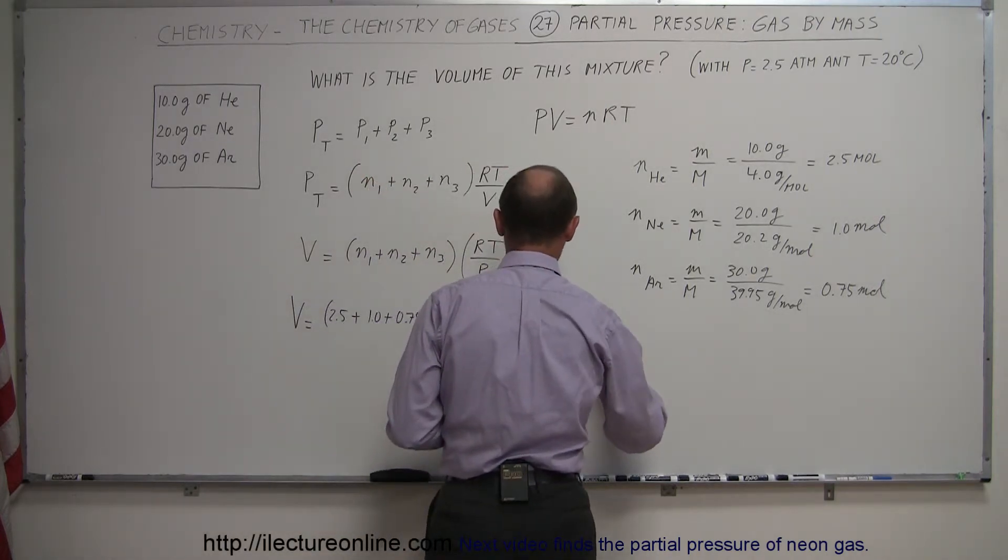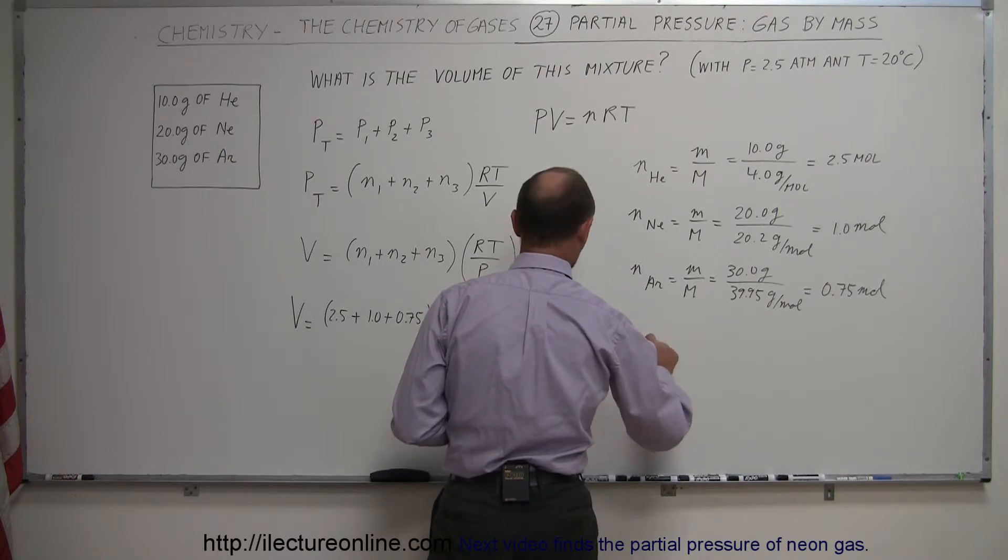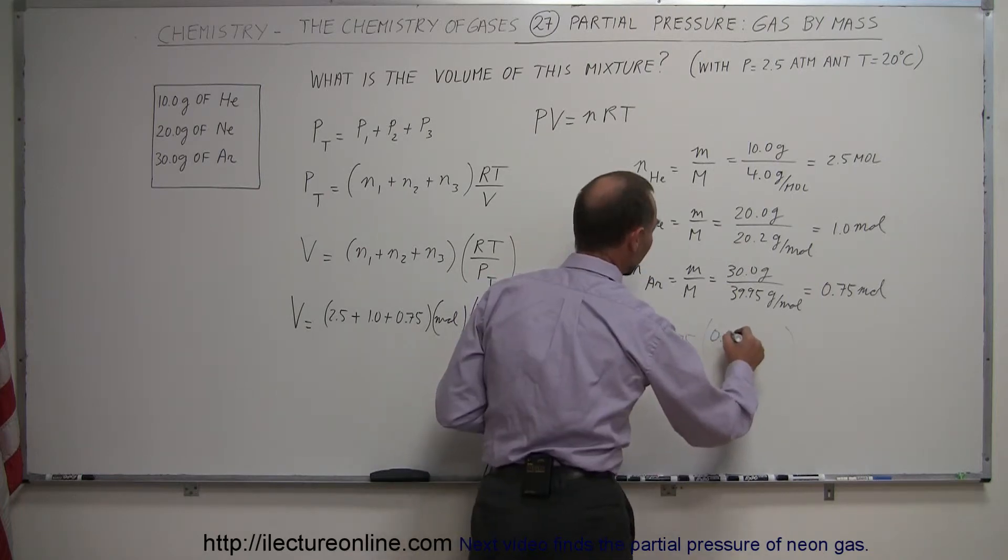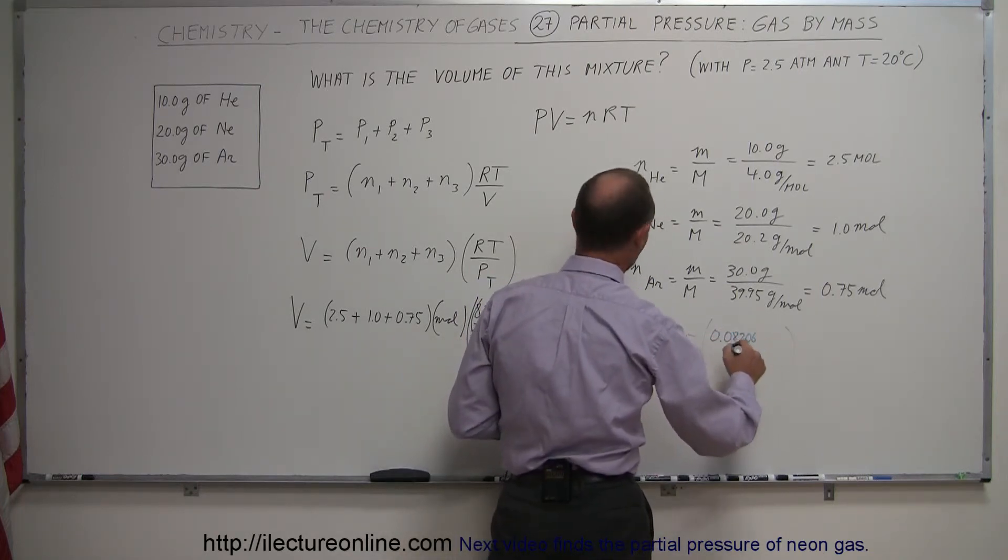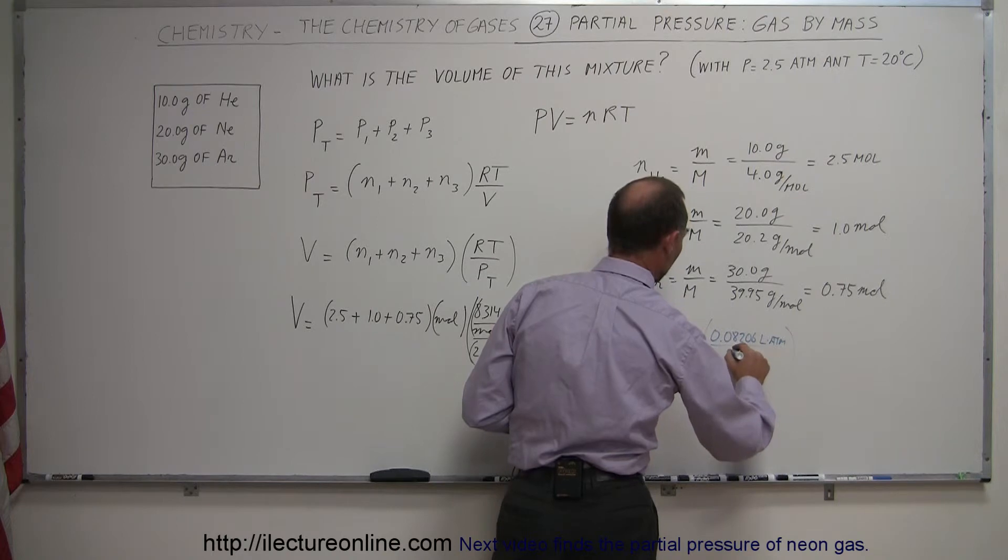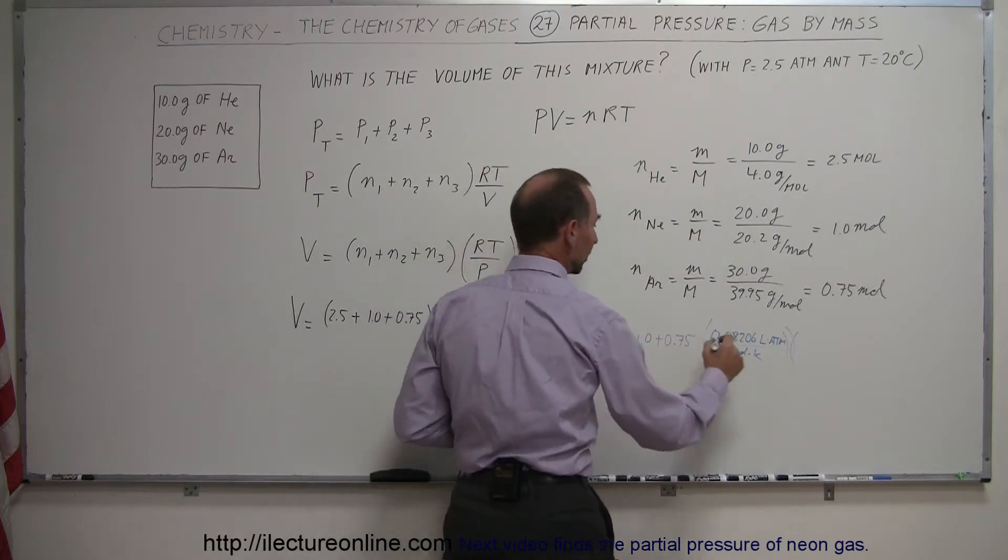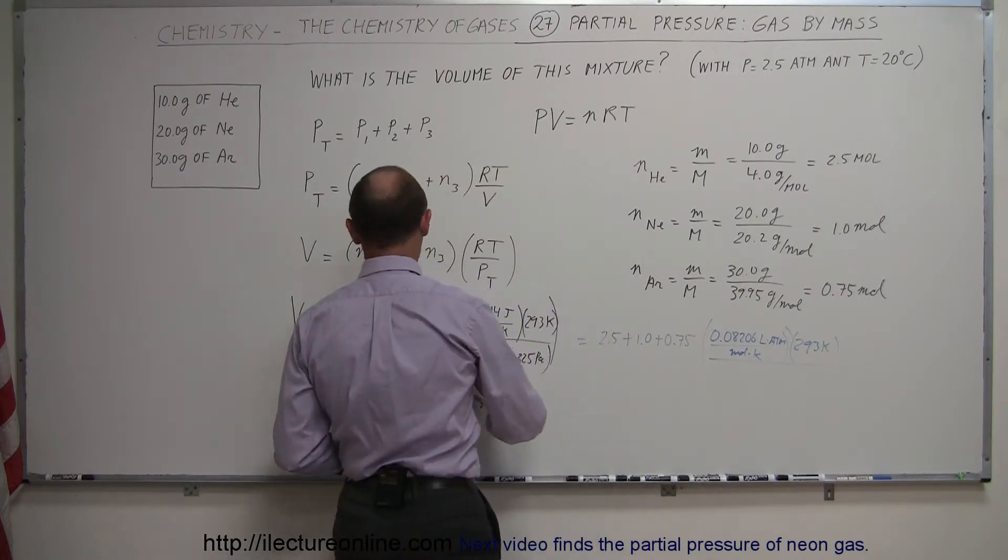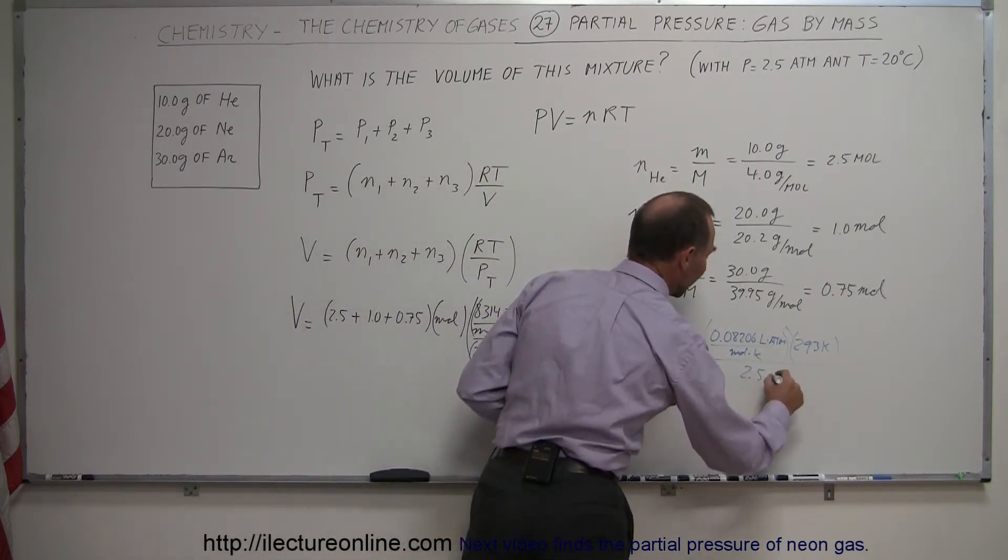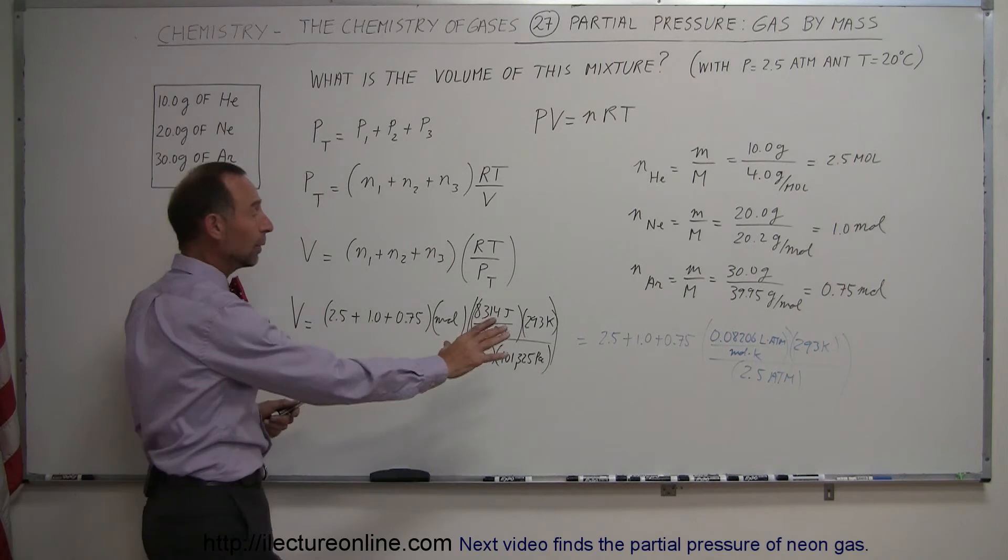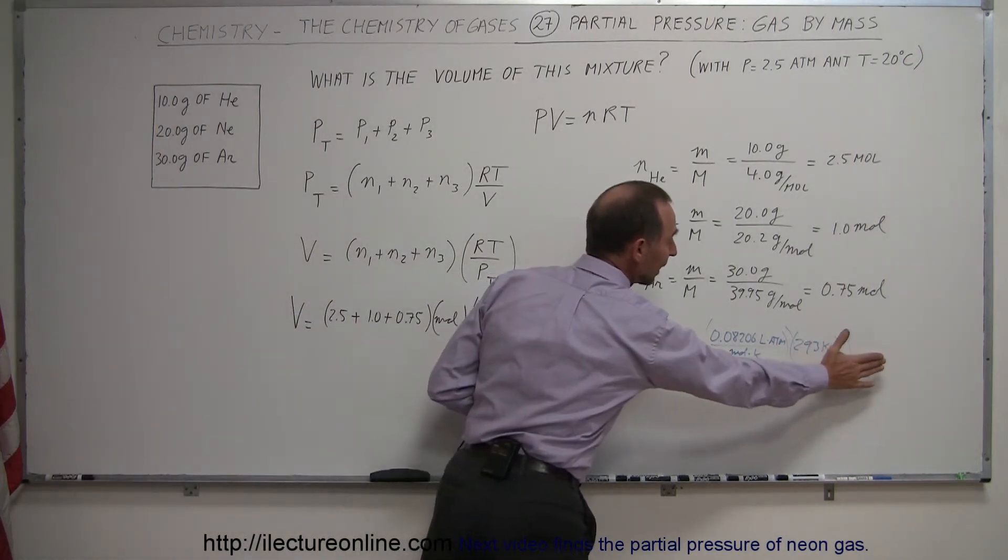This would equal 2.5 plus 1.0 plus 0.75, multiplied by 0.08206 liters atmospheres divided by moles Kelvin, multiplied by 293 Kelvin, and divide the whole thing by 2.5 atm. We could just leave it as atmospheres. If we calculate it the way we did in the blue ink, our volume would come out in liters. If we do it with standard units, our volume will come out in cubic meters. I tend to lean towards doing it like this, but you can see you could do it either way.